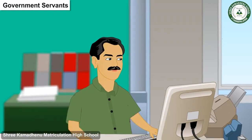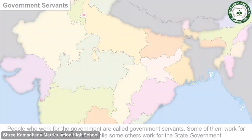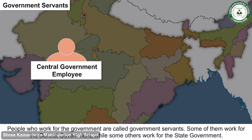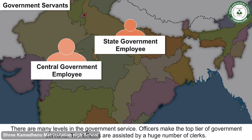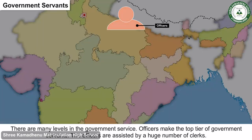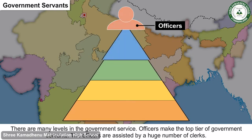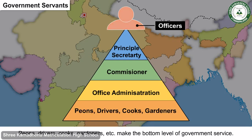Government servants: People who work for the government are called government servants. Some work for the central government, while others work for the state government. There are many levels in government service. Officers make up the top tier, assisted by a large number of clerks. Peons, drivers, cooks, and gardeners make up the bottom level of government service.